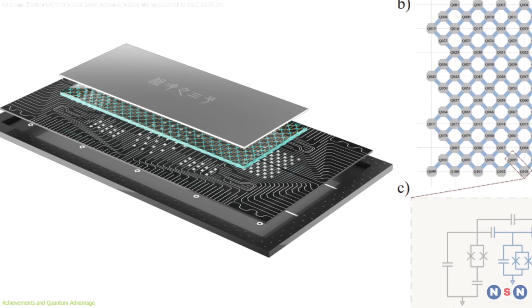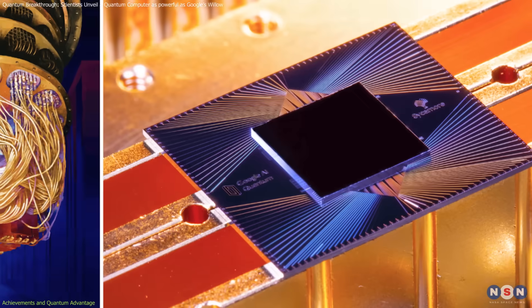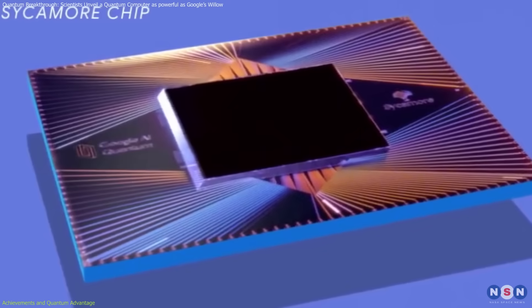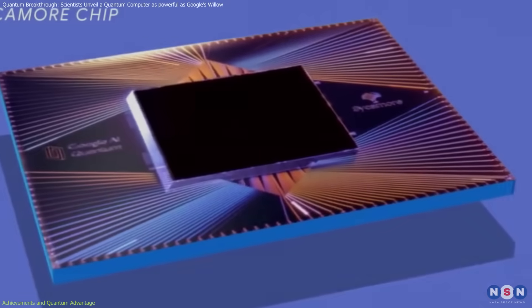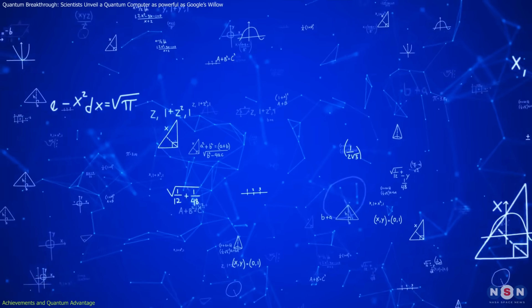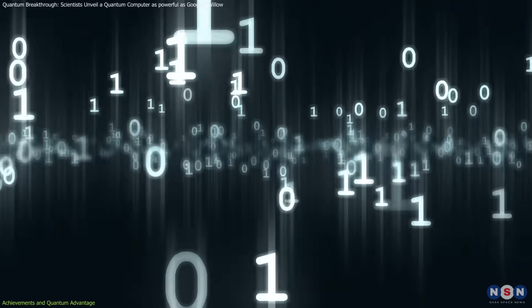This processor didn't just match Google's Sycamore processor, which achieved quantum advantage in 2019, it surpassed it. While Sycamore used 67 qubits, it tackled the challenge with 83 qubits, demonstrating calculations that were six times more complex.